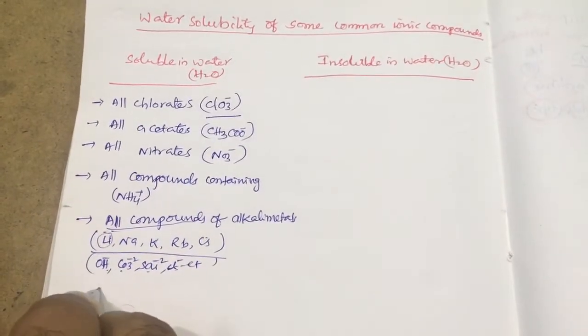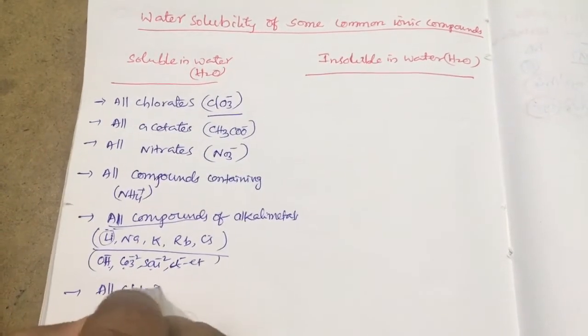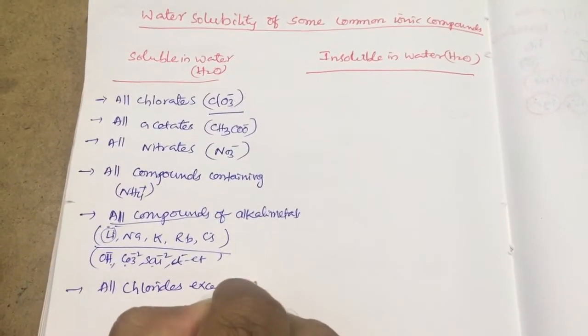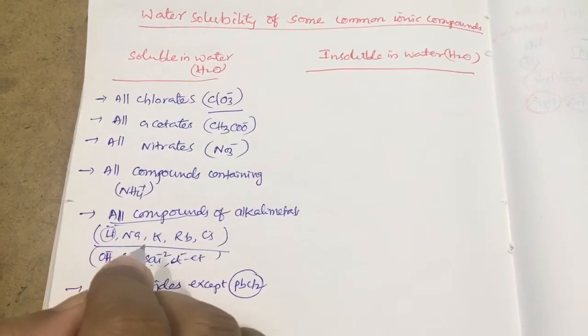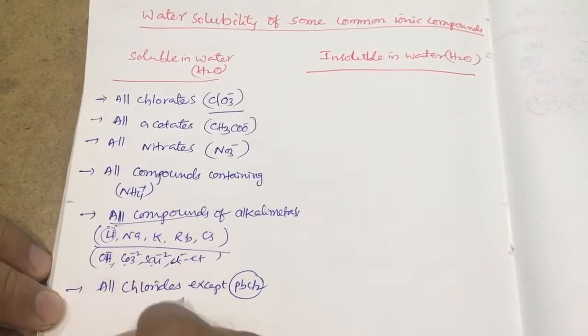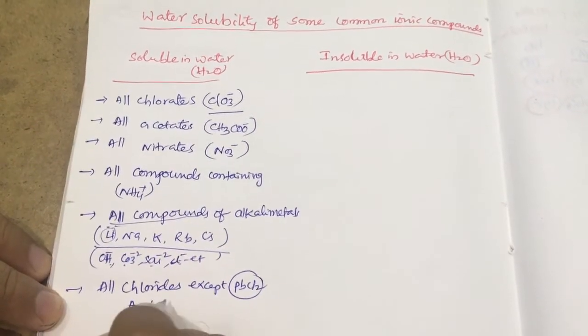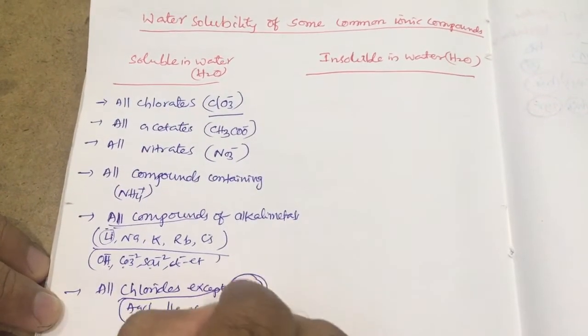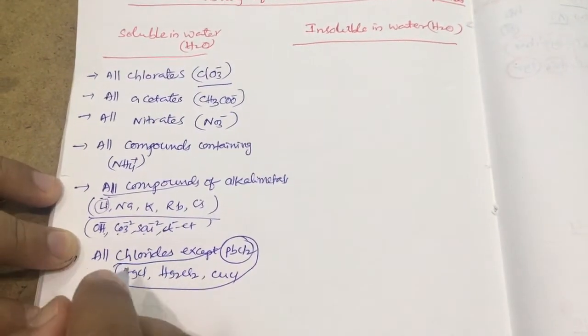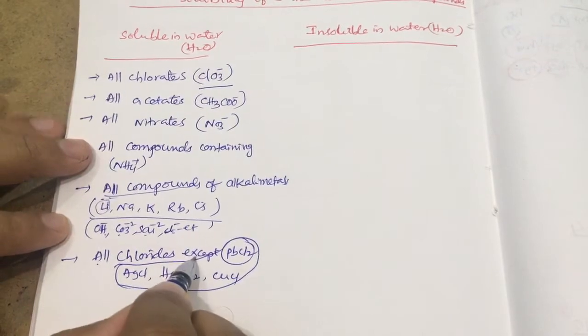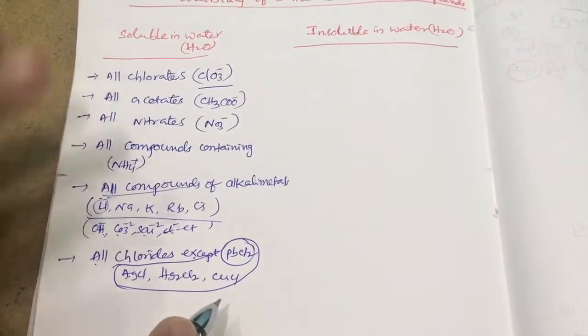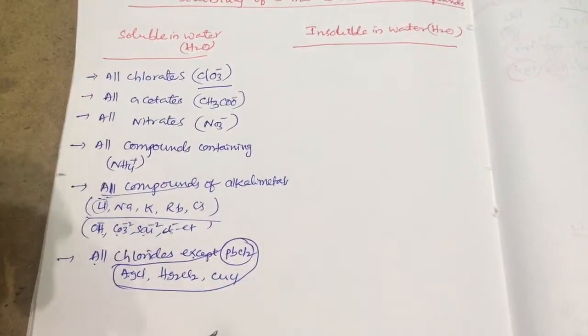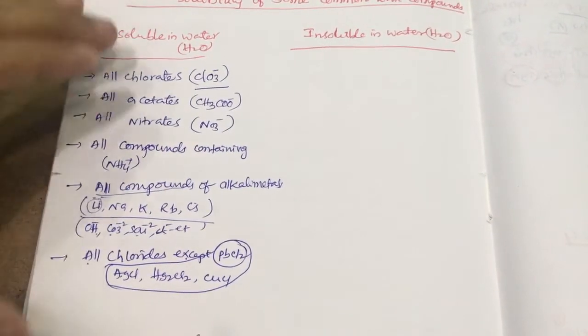Next, all chlorides except PbCl2, this is somewhat less soluble or you could consider insoluble. And AgCl, Hg2Cl2, and CuCl, these are least soluble. These are in precipitate form. So all chlorides are soluble except these, remaining all soluble. This is very important for competitive exam. Which of the following compounds are soluble in water, insoluble in water, like this they may ask questions.